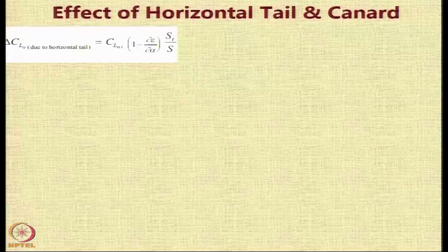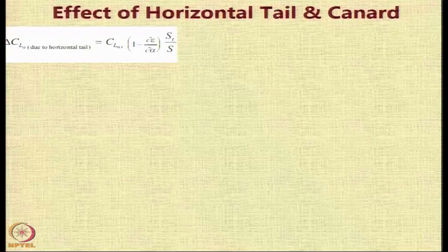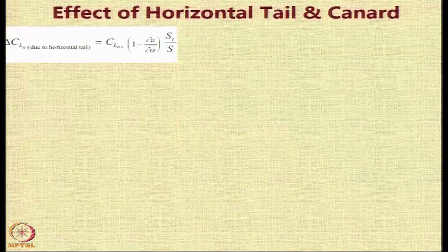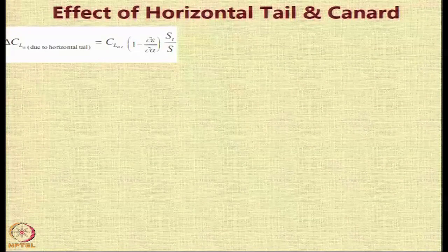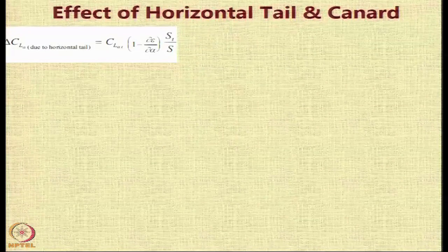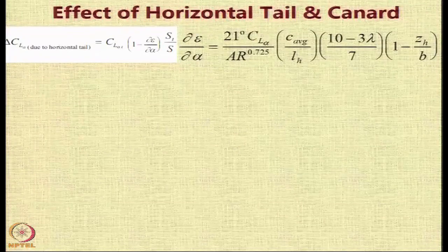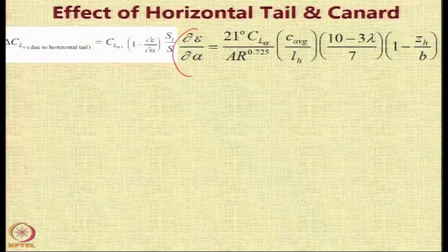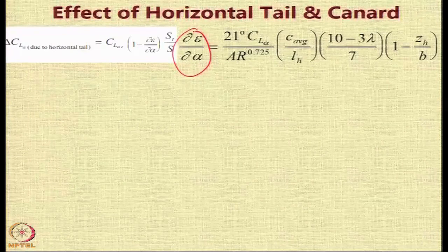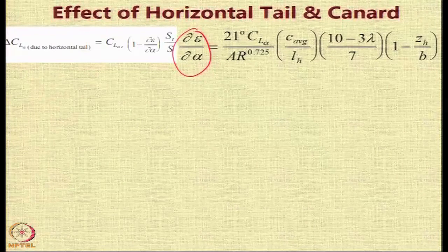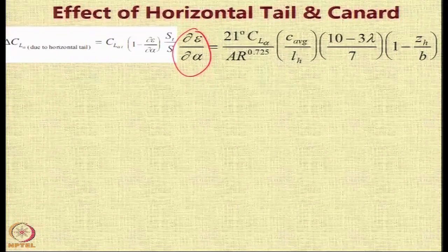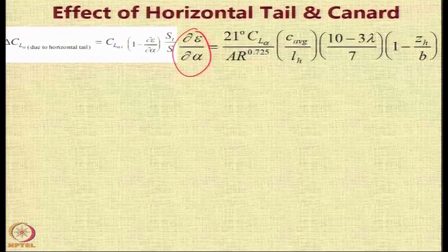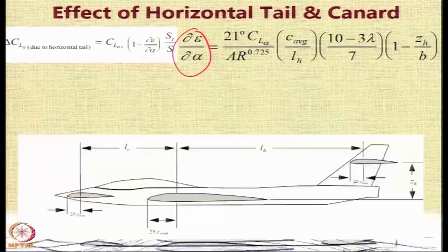Now the presence of tail, whether the horizontal tail or a canard, also affects the lift that is produced. So the delta CL because of horizontal tail is equal to the CL alpha of the tail into 1 minus d epsilon by d alpha into ST by S, where d epsilon by d alpha is the effectiveness of the flap and its influence. So this is obtained using a formula which relates to the geometry of the flap.